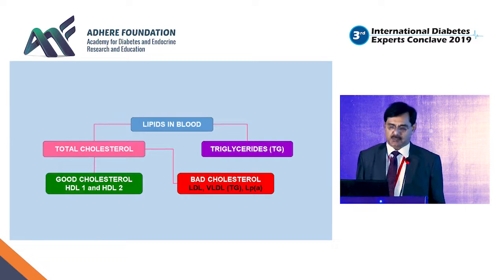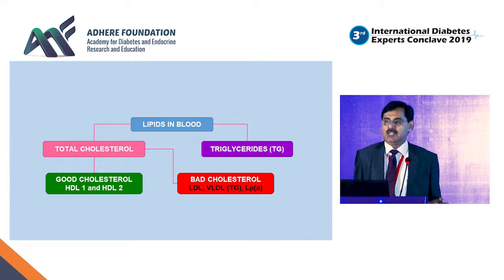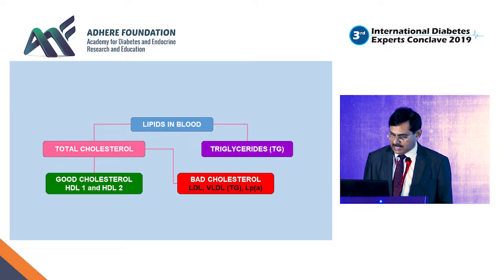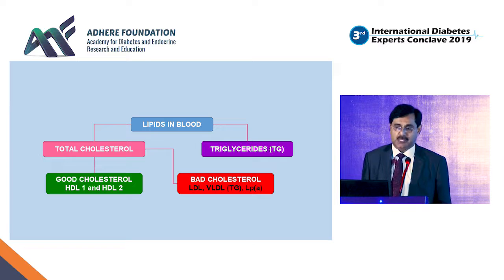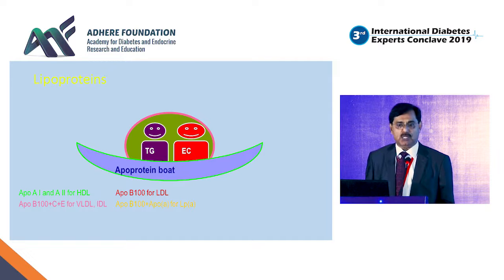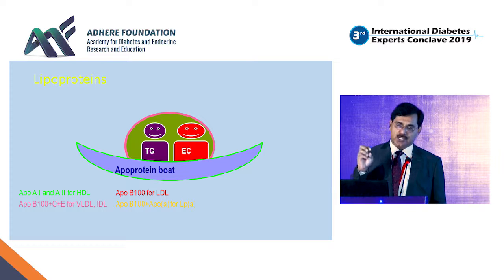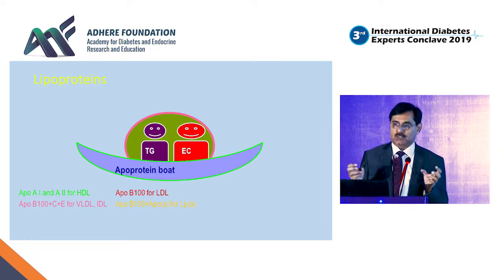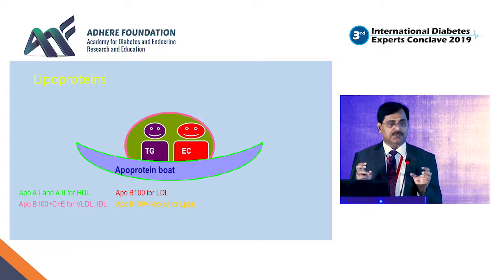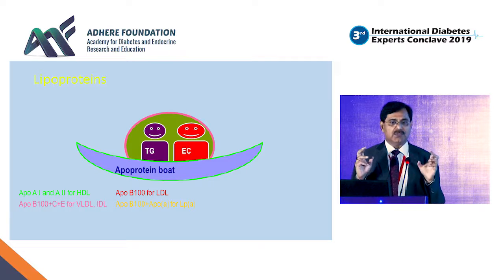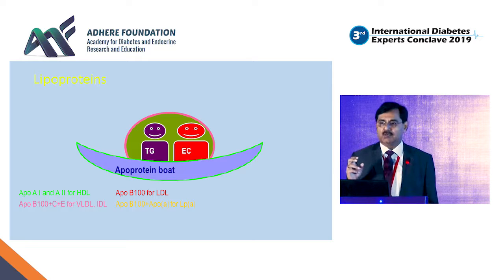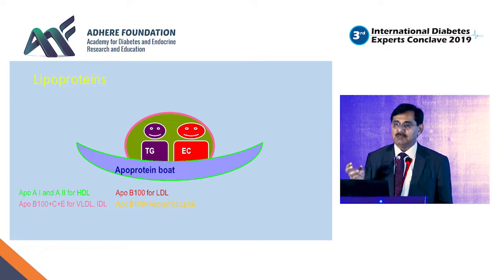When you do a blood test for a lipid profile, you are looking at total cholesterol, HDL cholesterol, triglycerides, LDL, and VLDL. Better labs are also now giving lipoprotein little a. Apolipoprotein A and apolipoprotein B are the particles that combine with lipid particles and help in the transfer of these molecules into individual cells and tissues.